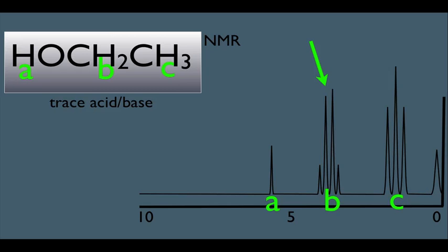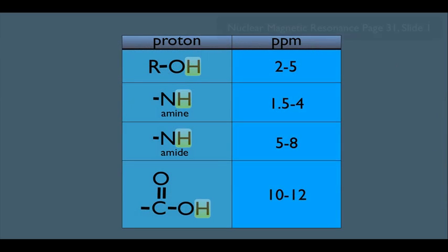Now, another thing I'd like you to know here is the relative shifting of these types of hydrogens. Notice your chart here. Typically, alcohol hydrogens peak at around 2 to 5, amine hydrogens peak at around 1.5 to 4, amide hydrogens around 5 to 8, and carboxylic acid hydrogens around 10 to 12.